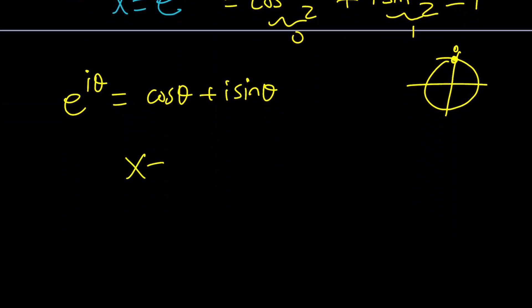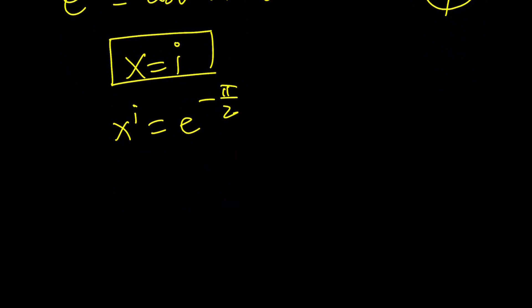Therefore, x = i is a solution to this equation, x^i = e^(-π/2). Well, you should have known that because i^i, and I made a video about this, equals e^(-π/2). But the million dollar question is: is i the only solution? Let's check it out.